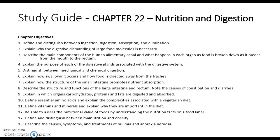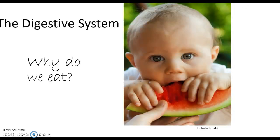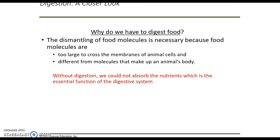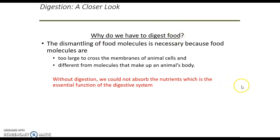Study guide — feel free to pause this if you want to look at it in more depth, but you'll also find it in Brightspace. So why do we eat? What is the purpose of it? There are four stages of food processing, which are very useful to review. It kind of starts off your chapter on digestion — you can present a food item to our body's cells, for example a banana, but our cells really don't know what to do with that.